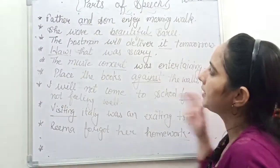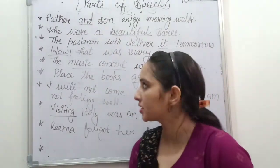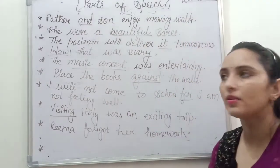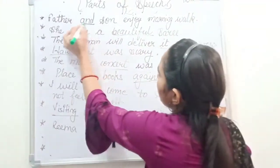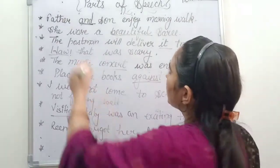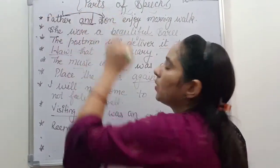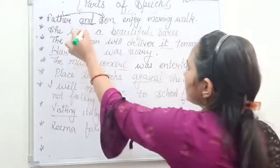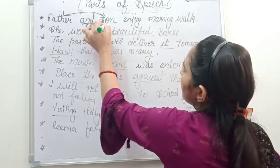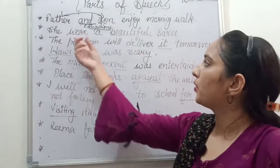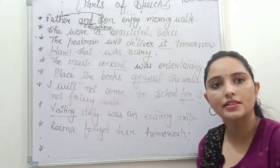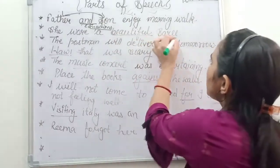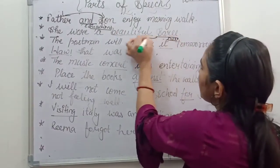Now let's look at practice questions where we cover the remaining parts of speech. First: 'Father and Son enjoy morning work.' The underlined word 'and' is joining two separate nouns — 'father' and 'son' — so it is doing the work of a conjunction.